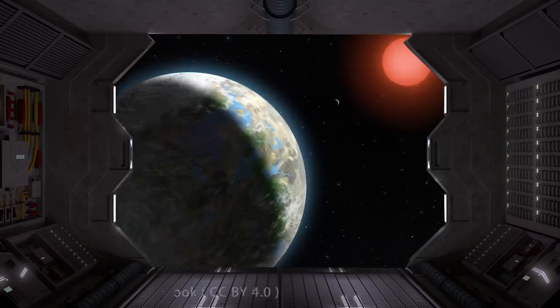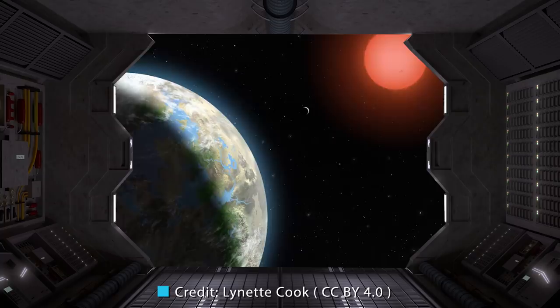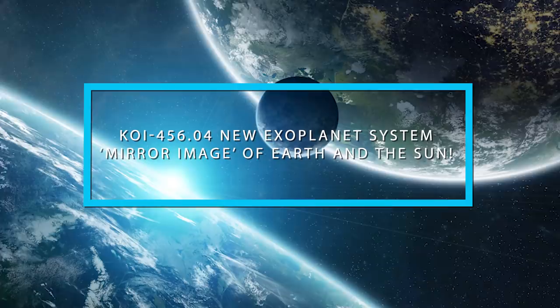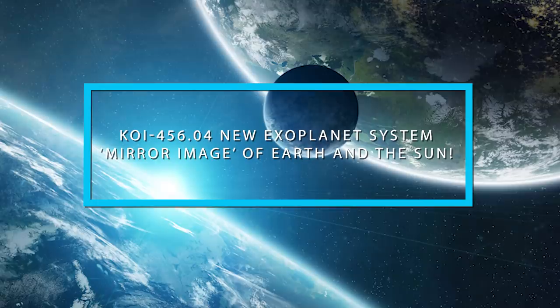From what the pairing of this particular sun and planet mean to whether it's something that we could habitate and more, join us as we reveal to you KOI 456.04, a new exoplanet system that is a mirror image of Earth and the Sun.